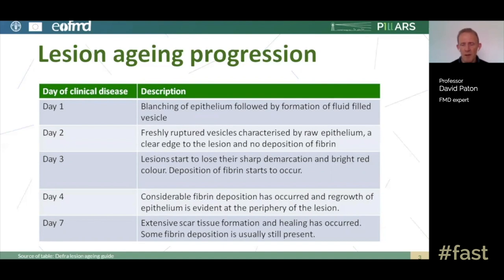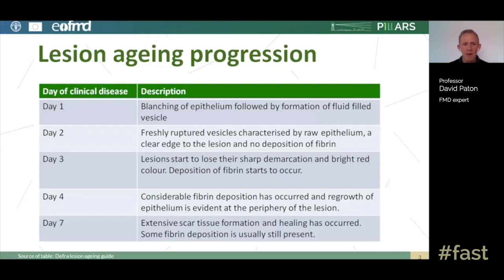On day two, the vesicle ruptures, giving the appearance of a freshly ruptured vesicle characterized by raw epithelium, a clear edge to the lesion, and no deposition of fibrin. At day three, lesions start to lose their sharp demarcation and bright red surface color due to the beginning of the healing process, characterized by the start of fibrin deposition. By day four, considerable fibrin deposition has occurred and regrowth of the epithelium is evident at the periphery. By around day seven, there is extensive scar tissue formation and healing has taken place; beyond seven days you won't see much fibrin.